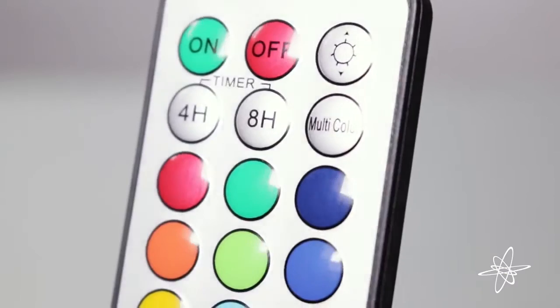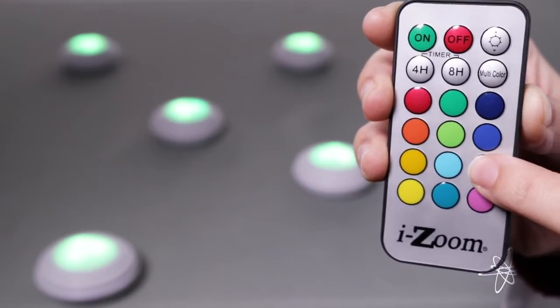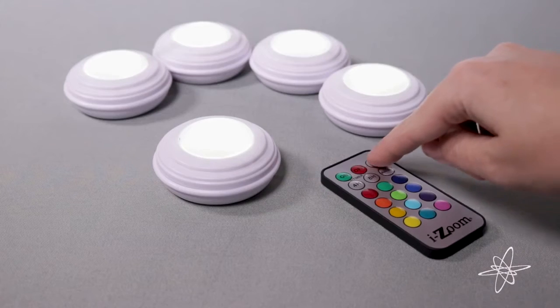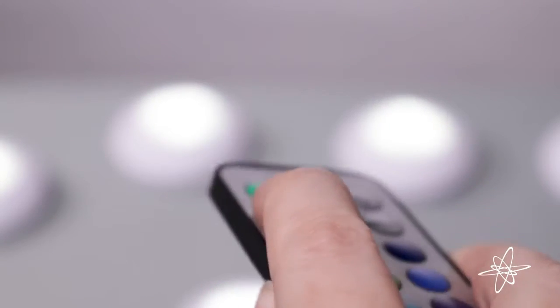The remote control can be used to power on and off, select from 12 different colors, cycle through colors, select the white light, adjust the white from full to dim, and apply four or eight hour timers.